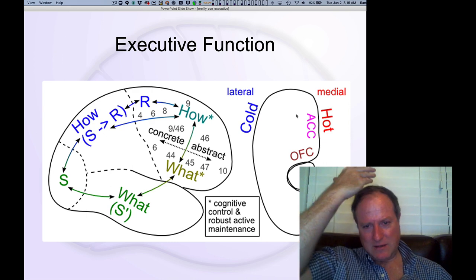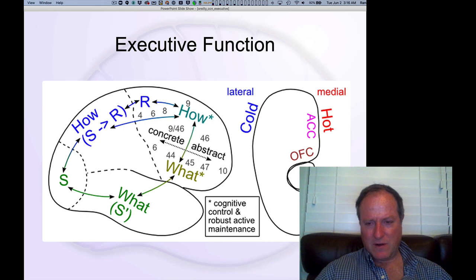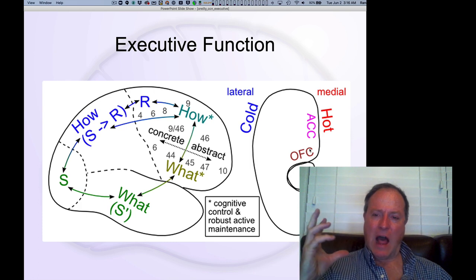And then if we kind of take this slice through the brain, this coronal slice, we can look at the medial part over here in the middle. Again, this anterior cingulate OFC areas that are very important for this affective, hot,